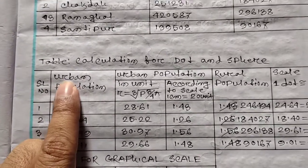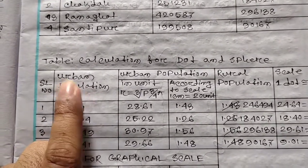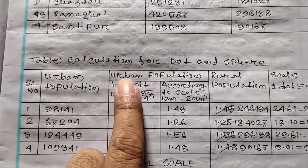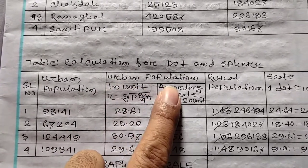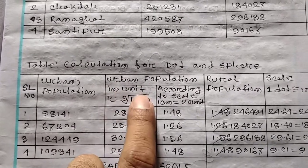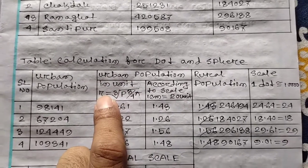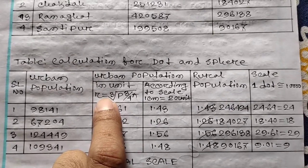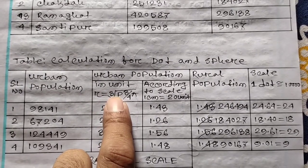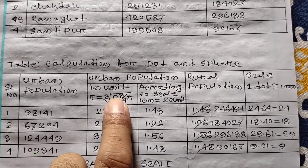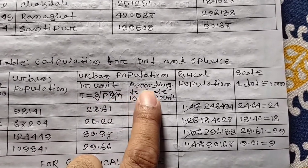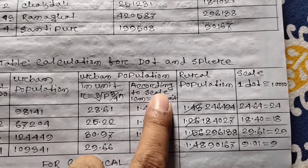Let me write the R1 population as a table. In unit R, R equals to cube root of P — where P means population — P into 3 divided by 4π. Let me write this to scale.